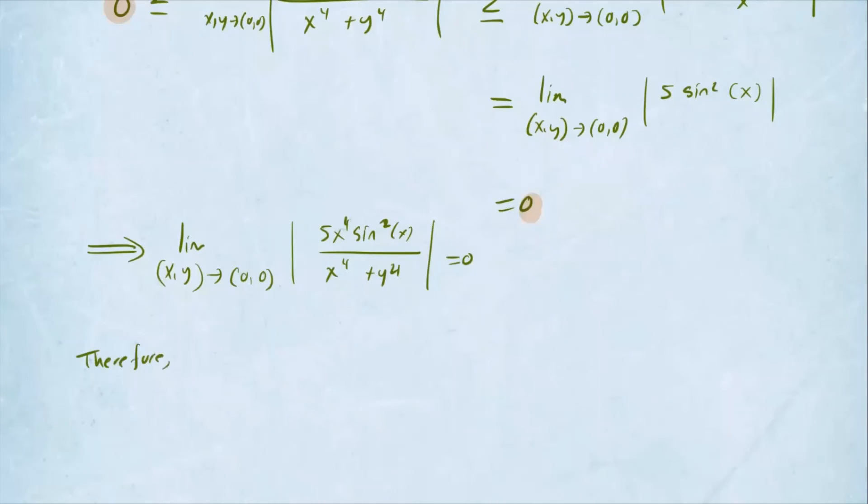the original problem we're looking at, which was without the absolute value, so the limit as (x, y) approaches (0, 0) of our original problem, which was without the absolute value of 5x⁴sin²(x) over x⁴ + y⁴ is also equal to 0. So that's our final statement.